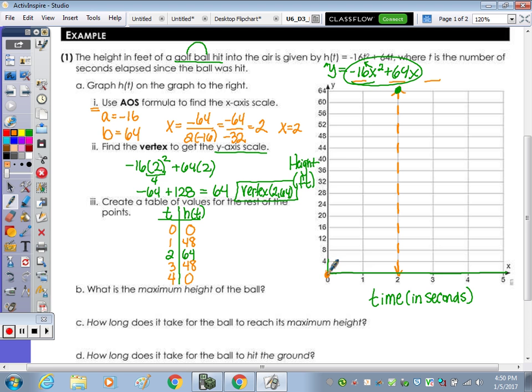We don't need the negative 80. So we'll take those points from the x values of 0 to 4. So 2, 1, 3, and it's symmetrical. So 48, 48, 0, 0, 4, 0. So let's plot these points. 0, 0, 1, 48. (2,64) is already graphed because that's the vertex. 3, 48 and 4, 0. So now let's draw our curve.